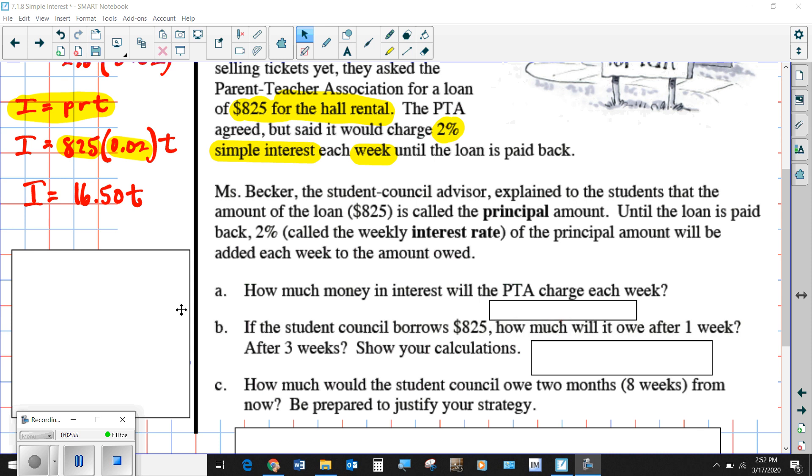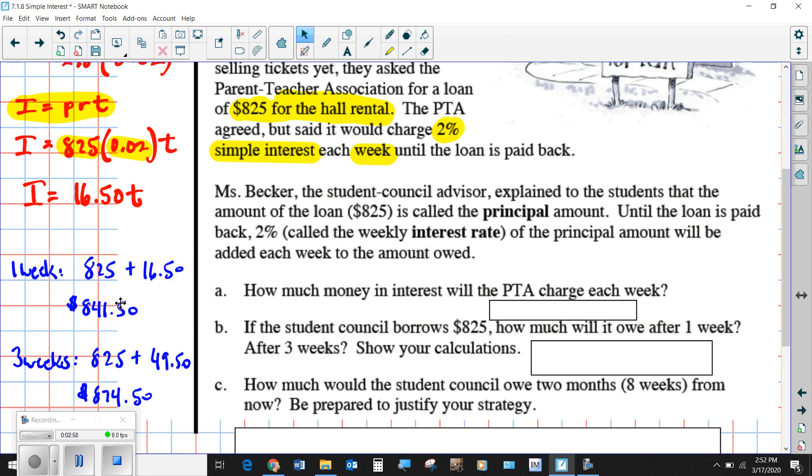Now I'm going to show you what the answers are. How much money will they charge per week? We already answered that—$16.50. If you had it for one week, how much would you owe? The amount of money that you owe, look over here in the blue, you have to pay back what you borrowed plus the interest that is charged to you. So for one week, 825 plus 16.50 is $841.50. For three weeks, you're going to multiply $16.50 times three, then add it to the $825 to get $874.50.